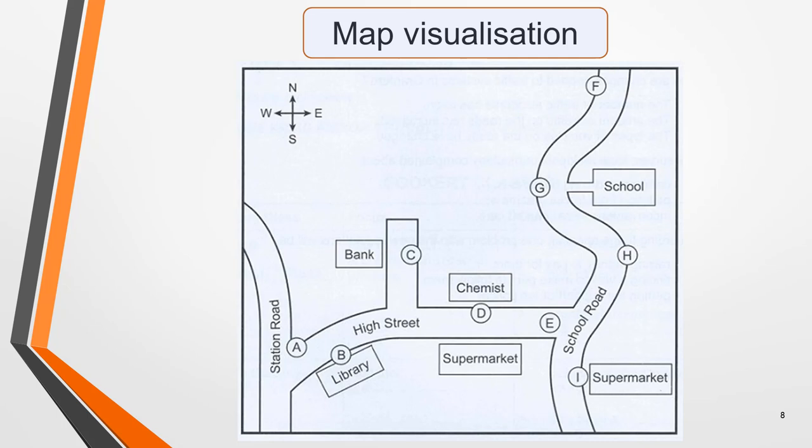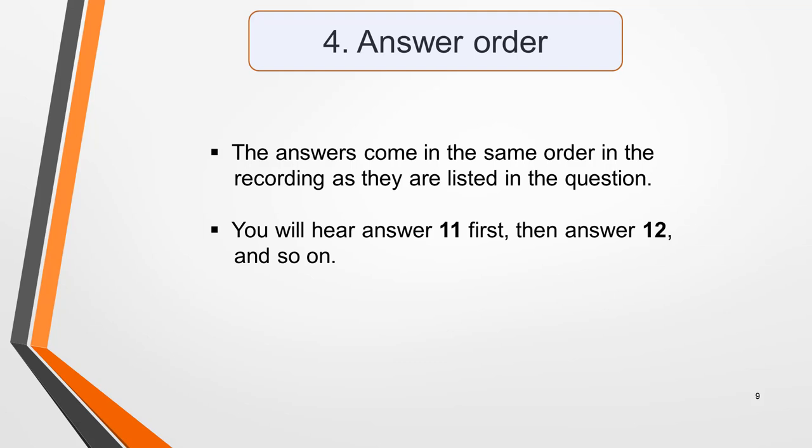Even a few seconds spent doing this will help you to follow the information or directions given by the speaker and to identify the correct answers. You can do a similar visualisation with a map question — imagine yourself standing at a particular point and picture what you can see around you, noting the different buildings and other features. Pause the video again and try this with our sample map question. The answers will come in the same order in the recording as they are listed in the question, so for our practice question you'll hear answer 11 first, then answer 12 and so on. This makes it easier to pick out the answers than if they were in a random order.